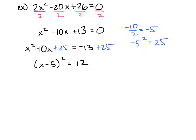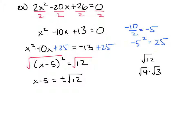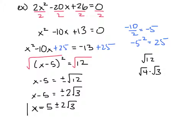To solve, I take the square root of both sides: x minus 5 equals plus or minus the square root of 12. I check whether 12 breaks down — 4 goes into 12, so the square root of 12 equals the square root of 4 times the square root of 3, which simplifies to 2 square roots of 3. So x minus 5 equals plus or minus 2 times the square root of 3. Adding 5 to both sides gives x equals 5 plus or minus 2 square roots of 3. Since we can't simplify further to a rational number, these are the solutions.